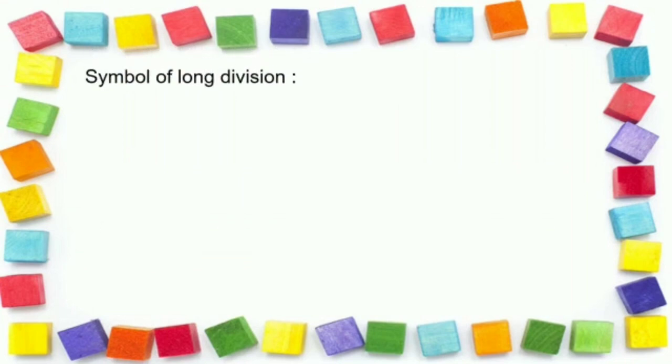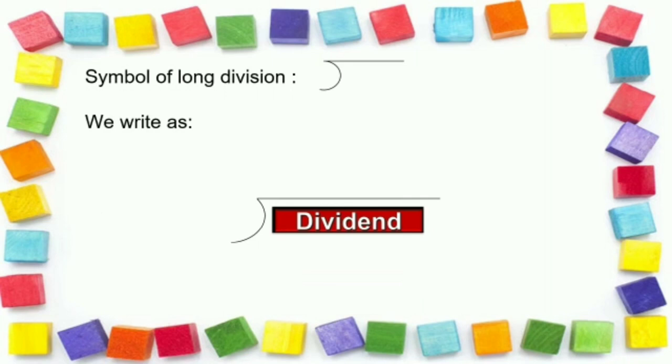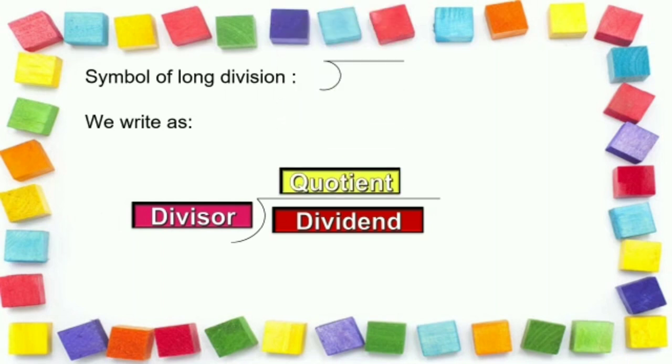To start with long division method, first let's learn how to draw the symbol of long division, followed by how to write in this long division symbol. We write dividend below the horizontal line, we write divisor to the left of the dividend in the curve, and we write quotient above the horizontal line.